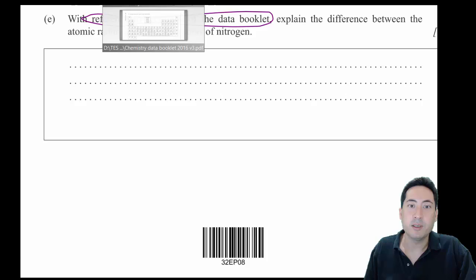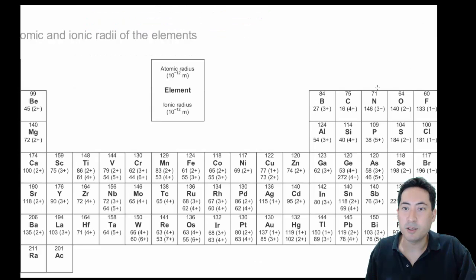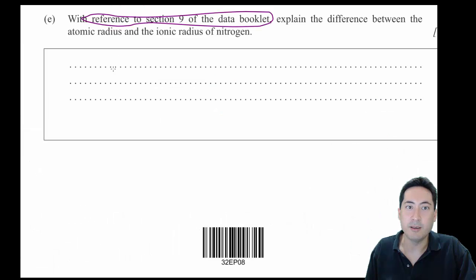So if we go to the data booklet and we see nitrogen, atomic radius is 71 divided by 10 to the minus 12, so I'll just call that picometers just to make it easier. Ionic radius in picometers is 146. So we need to actually say that before we do anything.